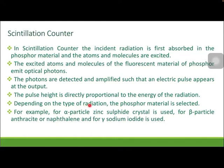Depending upon the type of radiation, the phosphor material is selected. There are a number of phosphor materials which scintillate or emit light flashes. For example, for alpha particles, zinc sulfide crystal is used. For beta particles, anthracite or naphthalene is used. And for gamma particles, sodium iodide is used.